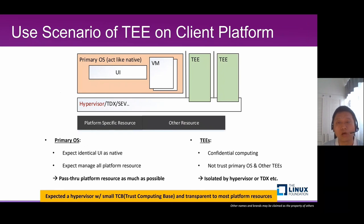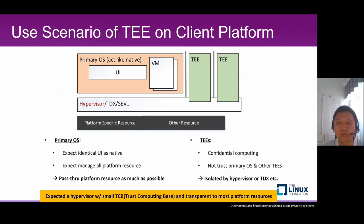Specific hardware support is not always there. So if we talk about the hypervisor solution, we expect a hypervisor with a small TCB, which makes it hard to be attacked and can be seen as trustworthy. At the same time, it should be transparent to most platform resources. Currently, the most popular hypervisor in the open source world is KVM. But KVM works together with the Linux kernel with over 20 million lines of code, so it has a very big TCB. And it's complicated for KVM to provide a solution of pass-through of platform resources to one VM. So we need to do something to build a suitable hypervisor for this scenario.